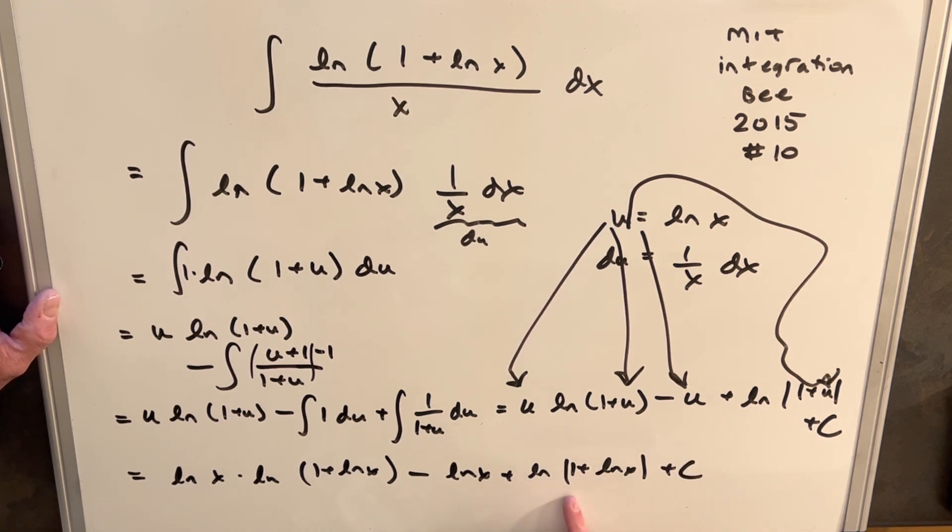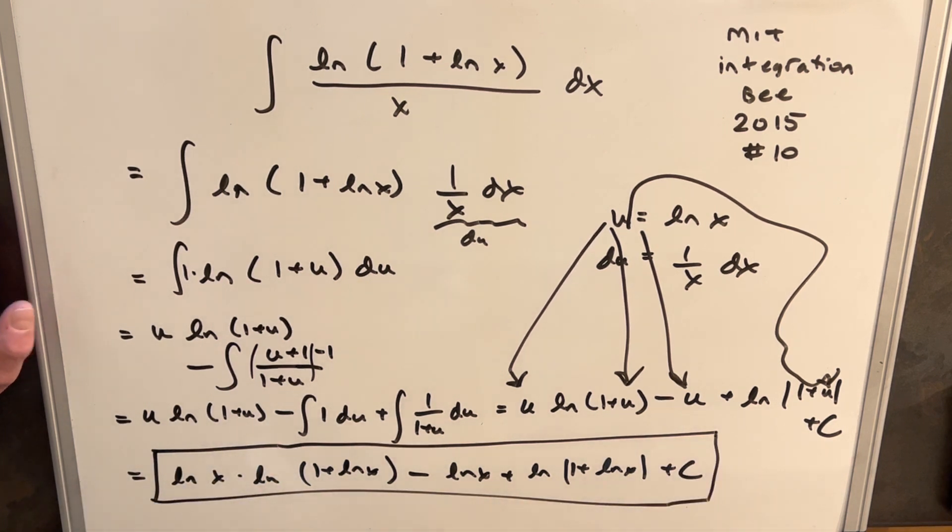I checked in the MIT Integration Bee, absolute value signs are not required, but I think I got it. Yeah, because that one isn't and this one is, so that's it. MIT Integration Bee 2015, number 10. Thanks for watching.